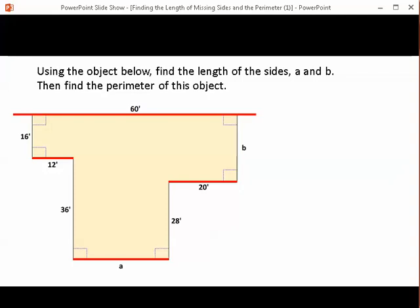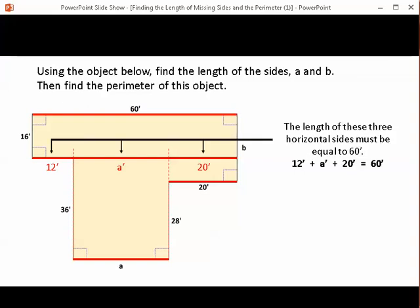So we can see that this object, the widest point, is at the top. It's 60 feet. So the bottom three pieces that we are looking at, the bottom three horizontal pieces, are 12 feet, A feet, and 20 feet. So once again, you'll notice that these three shorter horizontal pieces must add up to give you 60 feet.